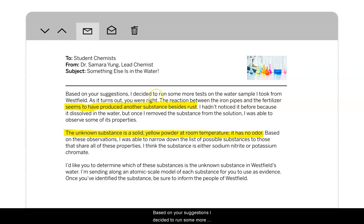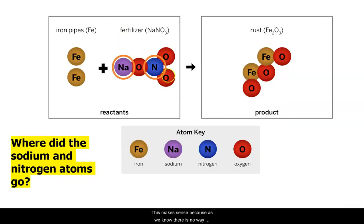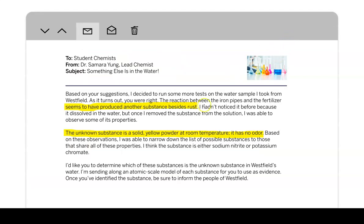Based on your suggestions, I decided to run some more tests on the water sample I took from Westfield. As it turns out, you were right. The reaction between the iron pipes and the fertilizer seems to have produced another substance besides rust. This makes sense because, as we know, there is no way these sodium and nitrogen atoms just could have disappeared. I hadn't noticed it before because it was dissolved in the water. But once I removed the substance from the solution, I was able to observe some of its properties.